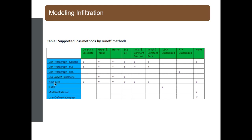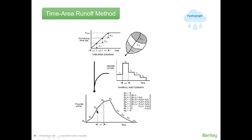Here's a handy table summarizing which loss methods are available for each runoff method in Civil Storm and Sewer GEMS. Another available runoff method is the time-area method, based on the concept of time-area histograms. The user needs to input a time versus contributing area curve or select a predefined diagram type, and the rainfall data must be input using a hyetograph so that a runoff hydrograph can be generated.